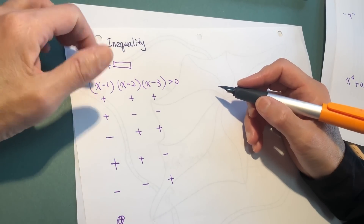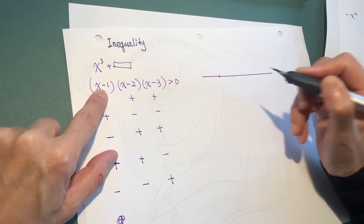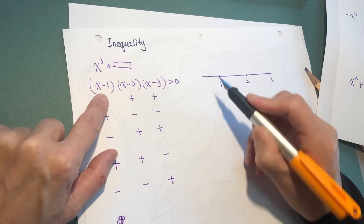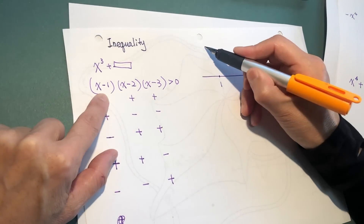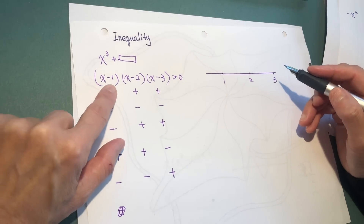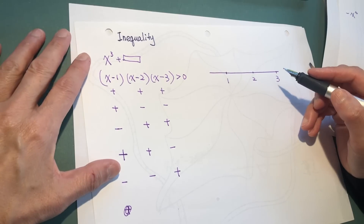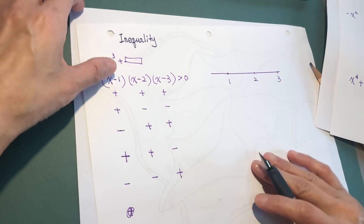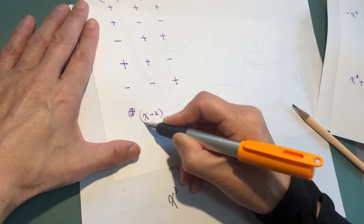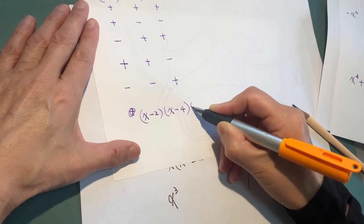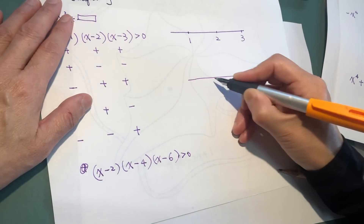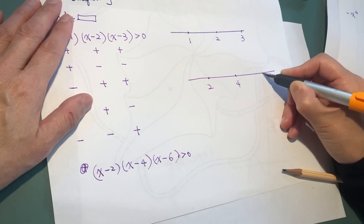What we can do instead is: we know the graph intercepts the x-axis at certain points, so we can test a number in each interval to determine the sign. For example, (x minus 2)(x minus 4)(x minus 6) greater than 0 — the intercepts are at 2, 4, and 6.